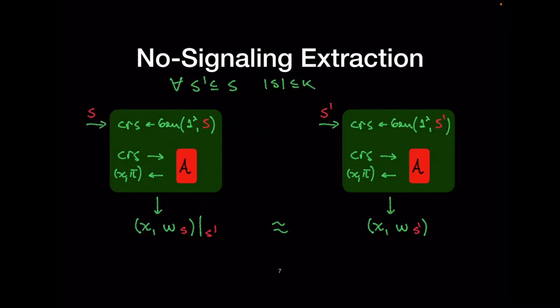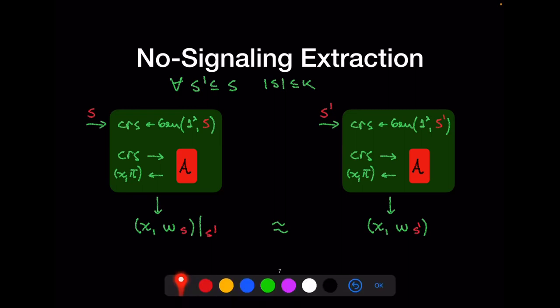The quasi-argument also has the property called non-signaling extraction. This is defined by considering two experiments with two sets: a larger set S of size at most k, and a subset S' contained in S. In the first experiment we run the local extractor with respect to S and then restrict the extracted witness to S'. In the second experiment we directly extract a witness with respect to S'. The non-signaling condition requires that these two distributions are computationally indistinguishable.